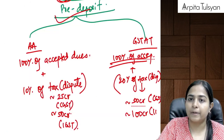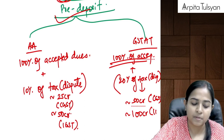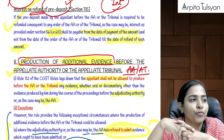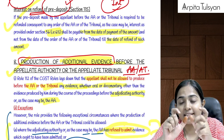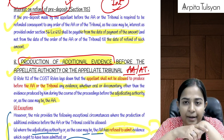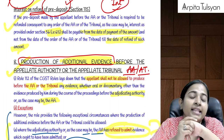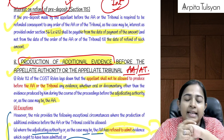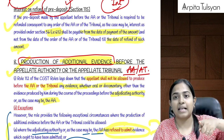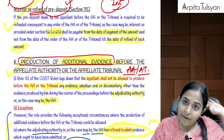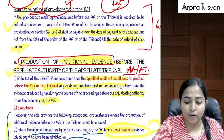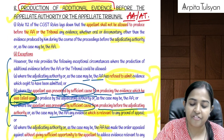If the taxpayer pays the pre-deposit and wins the appeal, and the decision entitles him to a refund of tax paid, he will also receive interest on that refund amount at the rate of 6% from the day the amount was paid to the day the refund is received.